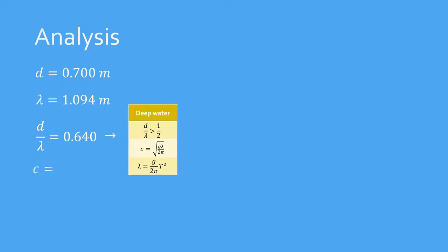Now that we have the wavelength, let's try to use the equations discussed previously. The depth to wavelength ratio is 0.64, which is larger than 0.5, so it is under the deep water regime. Using the deep water approximation, the wave's celerity is 1.31 m per second. But what happens if we use the general equation instead? Well, we also get 1.31 m per second. We have just verified that the simplification of the general equation for the deep water is correct.